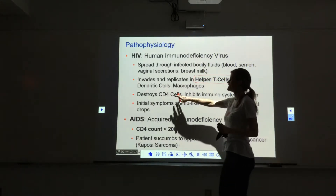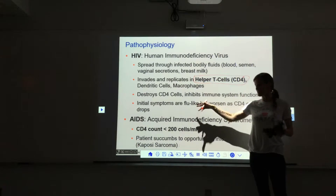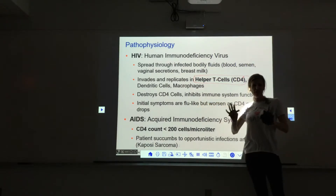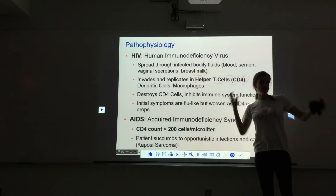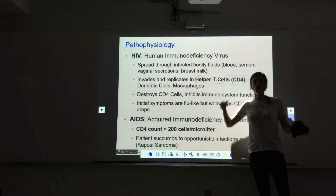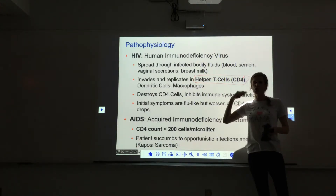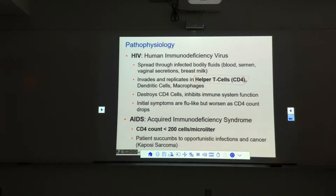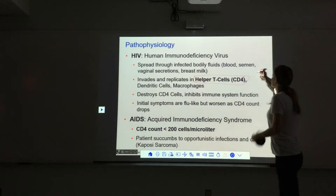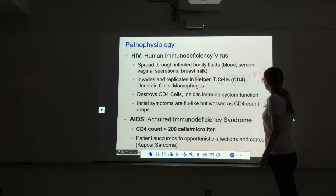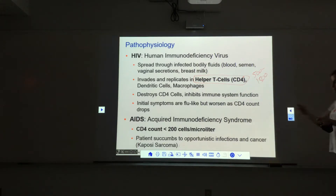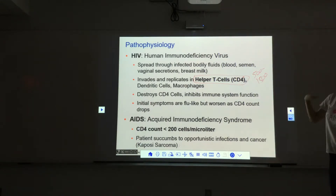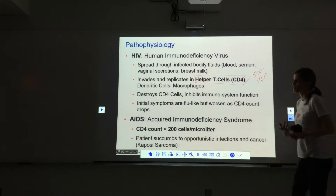Initially, what we'll see when we start to destroy those CD4 cells is flu-like symptoms — headache, drowsiness, body aches, fever. Then they typically rebound because your body says there's an infection and tries to fight it. But the virus keeps going, destroying more and more CD4 cells, and eventually you start to get worse symptoms as the CD4 count drops really low. A normal CD4 count is between 500 and 1500 cells per microliter.